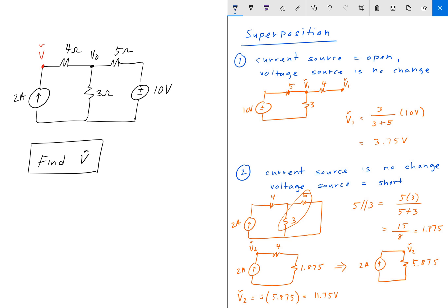And then in order to find V tilde, all we do is just add V1 and V2 together. So V tilde is equal to V1 tilde plus V2 tilde, which is 3.75 plus 11.75. And we get an answer of 15.5 volts.